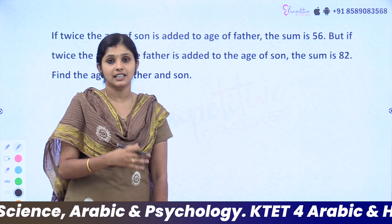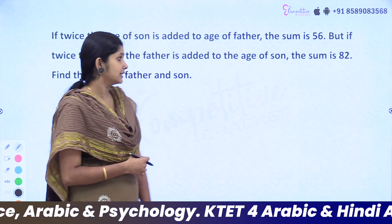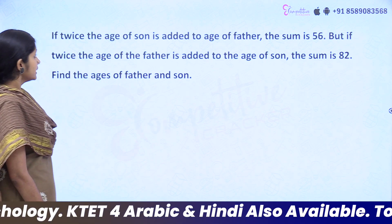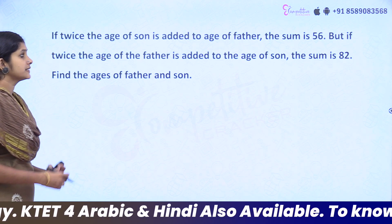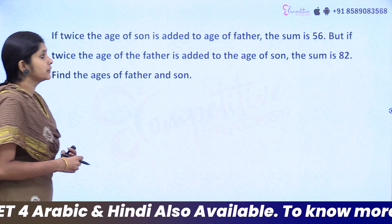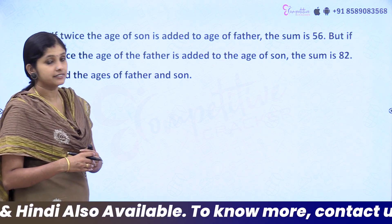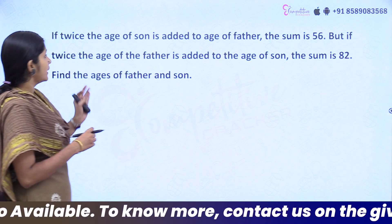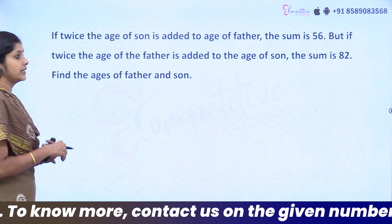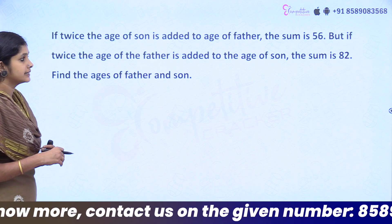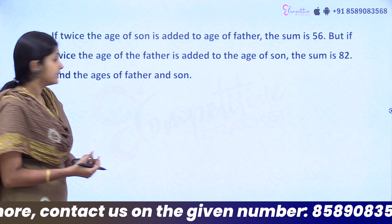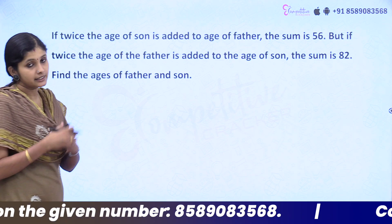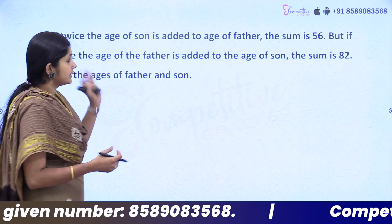We will discuss a few questions. Here's the first one: if twice the age of the son is added to the age of the father, the sum is 56. But if twice the age of the father is added to the age of the son, the sum is 82. Find the ages of father and son.